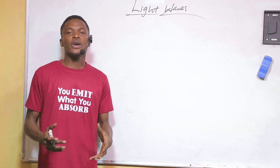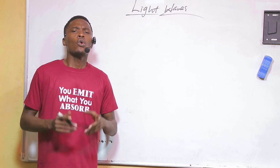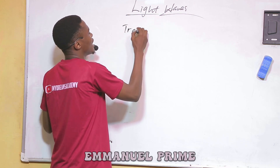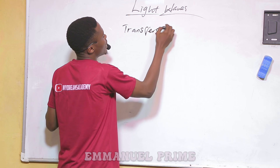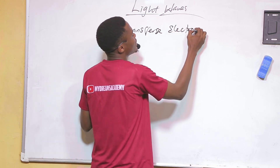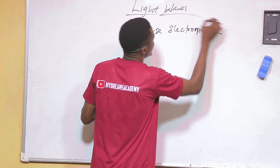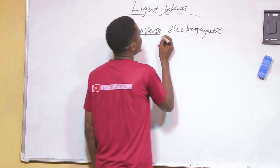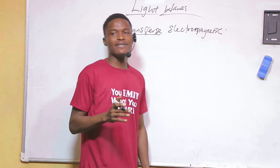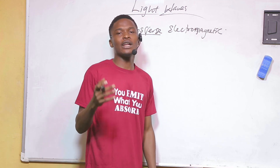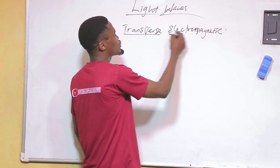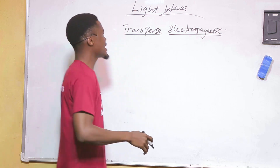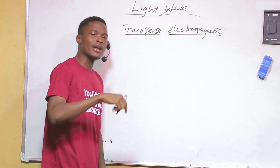We are going to talk about light waves today. Light waves are transverse electromagnetic waves. When we say transverse, it means that light travels perpendicular to its source. When we say electromagnetic, it means that it does not require a material medium for its propagation.